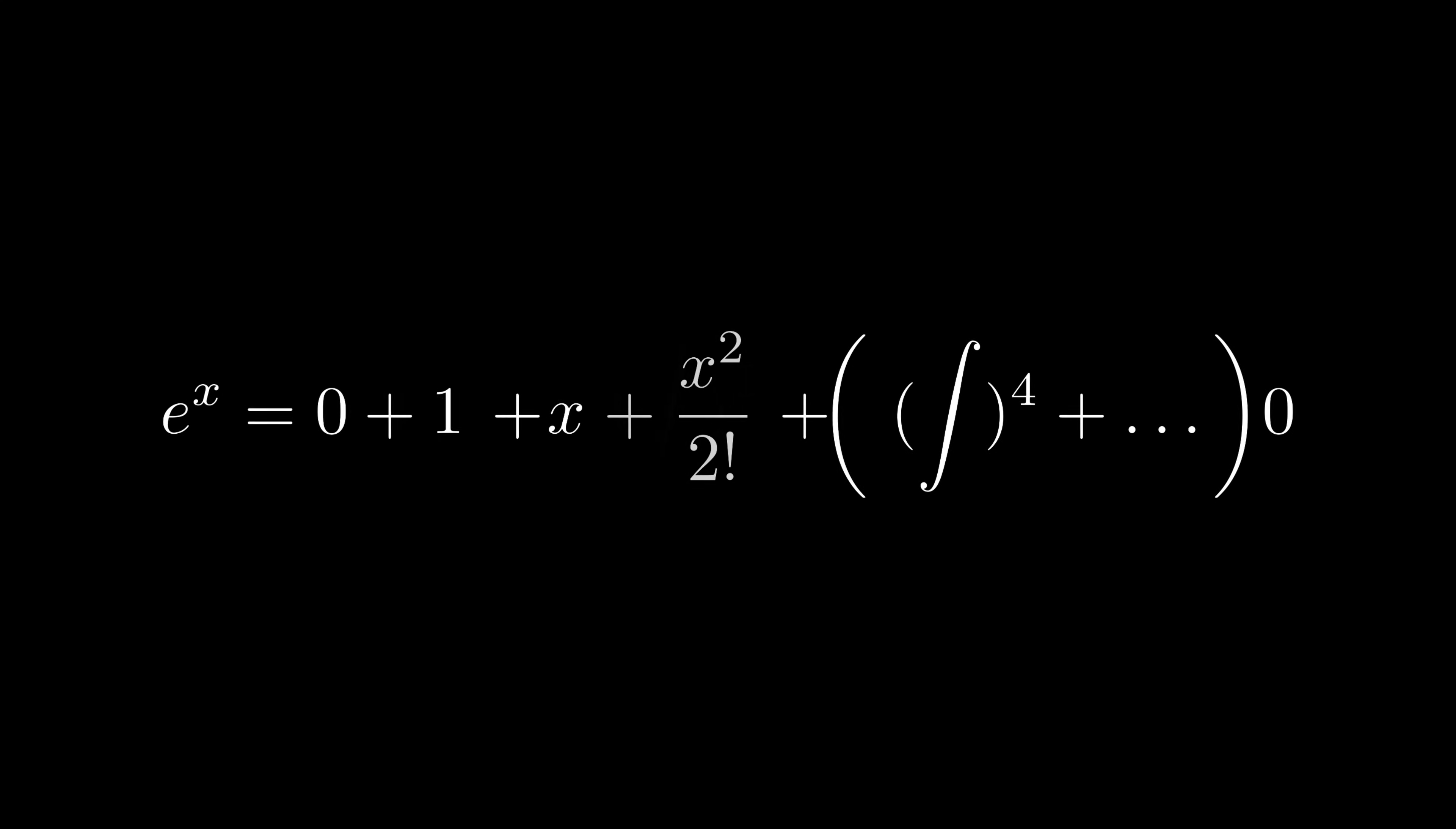The whose derivative is that? It's x squared over 2 factorial. Then this chain of logic continues, which recovers the Taylor expansion of e^x. Yummy.